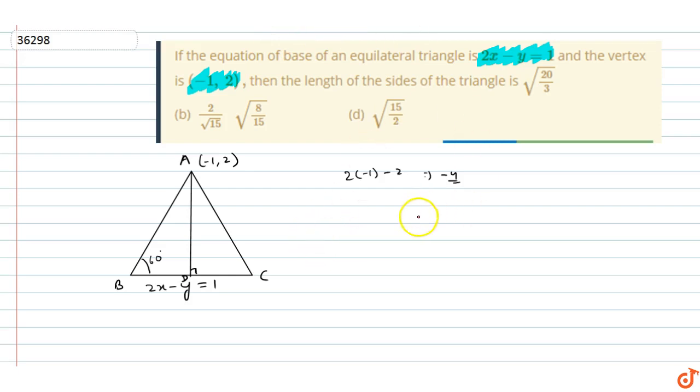We know that if we have a line ax plus by plus c equals 0, and a point (x1, y1), the distance from the point to the line is |ax1 plus by1 plus c| divided by √(a² + b²).